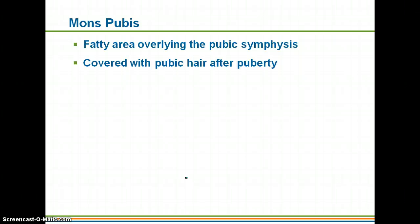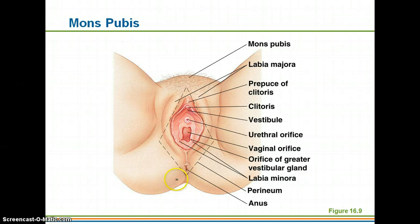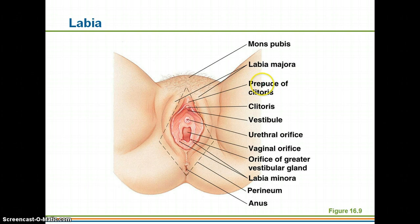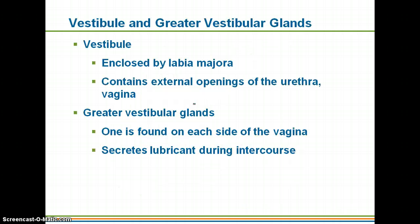The mons pubis is a fatty area. It overlies the pubic symphysis, and this is what becomes covered with hair after puberty. The labia — you have two labia. You have the labia majora, which is the hair-covered skin fold. This is actually comparable to the scrotum in males. Then the labia minora is the delicate hair-free folds of skin within the labia majora. So the labia majora is the outer skin fold, and the labia minora is the inner skin fold. The vestibule is basically the entire area enclosed by the labia majora.